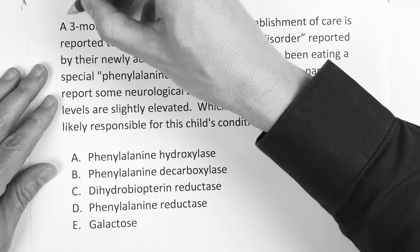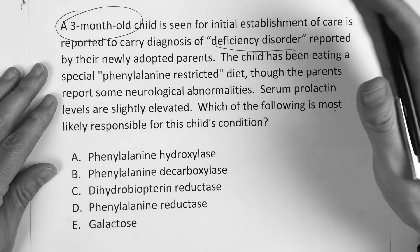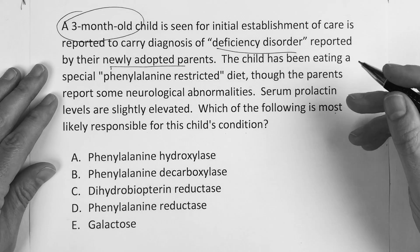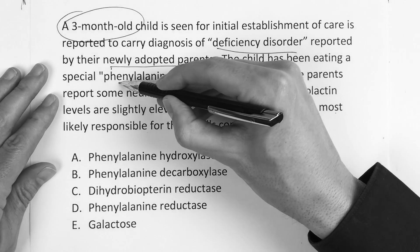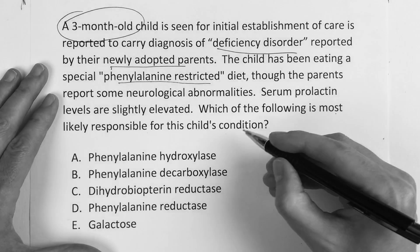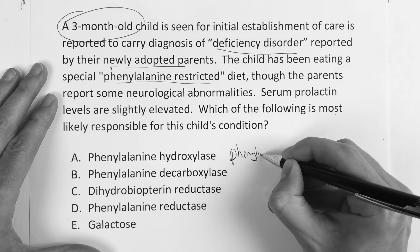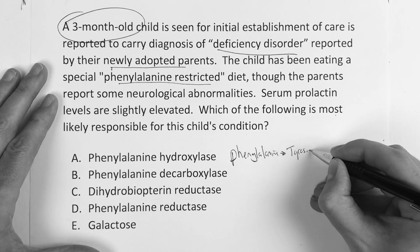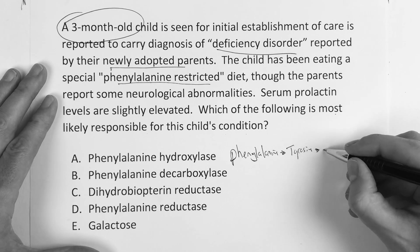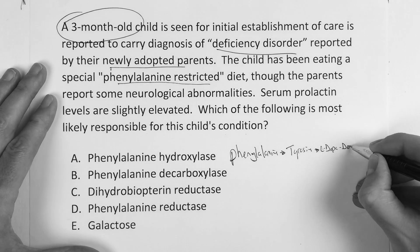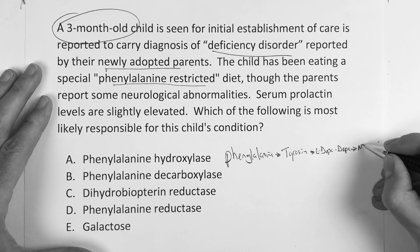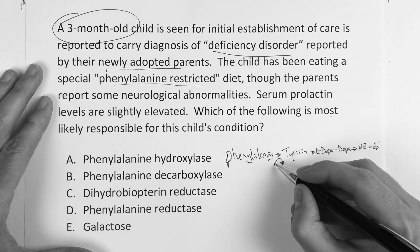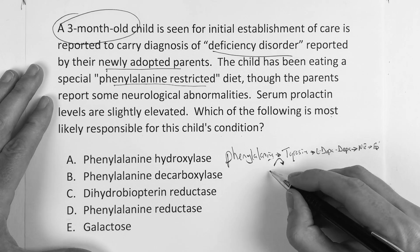So the child is three months old, there's a deficiency disorder — kind of vague — they're adopted, so we don't know any background or where they came from in the world. Phenylalanine-restricted diet, so obviously they're pushing you in that direction. What do we know? Phenylalanine makes tyrosine, which makes L-DOPA, which makes dopamine, then norepinephrine, and epinephrine. The conversion of phenylalanine to tyrosine is accomplished by the enzyme phenylalanine hydroxylase.